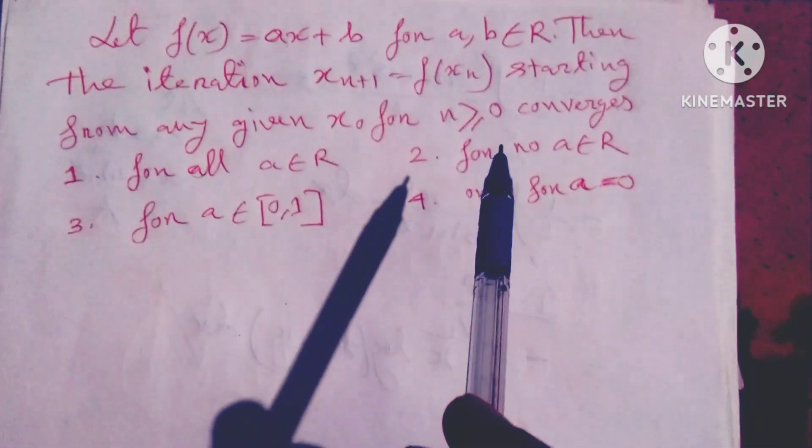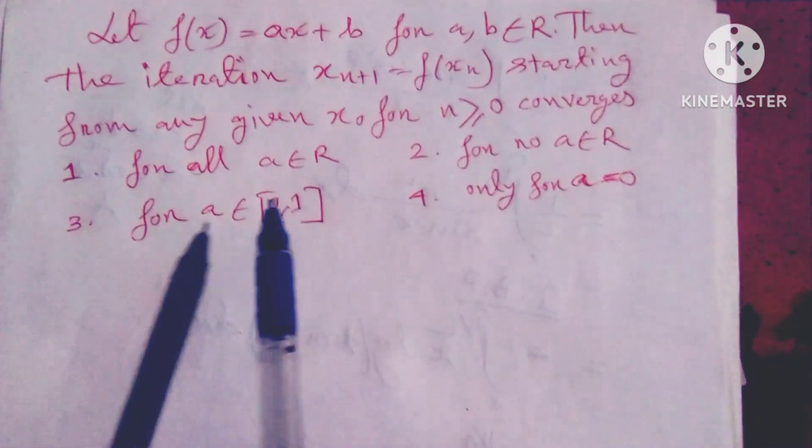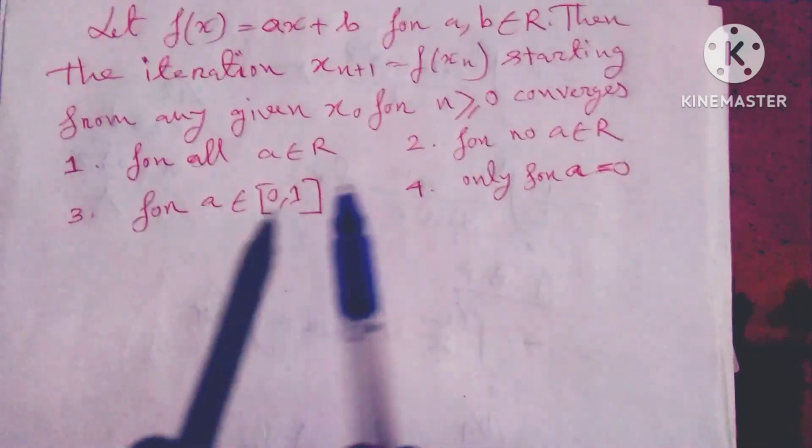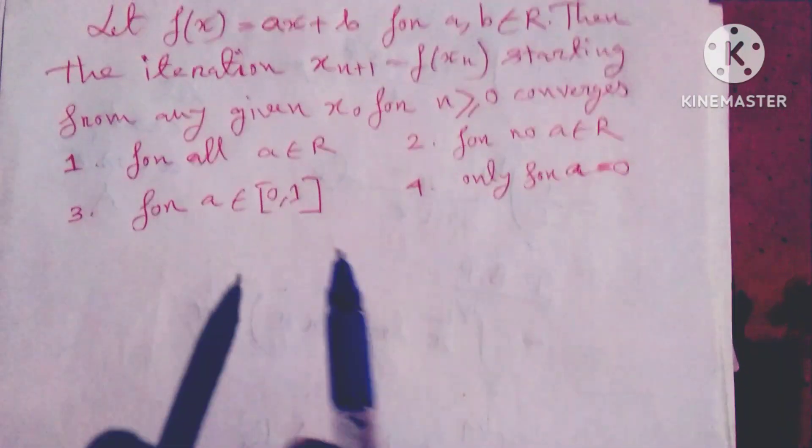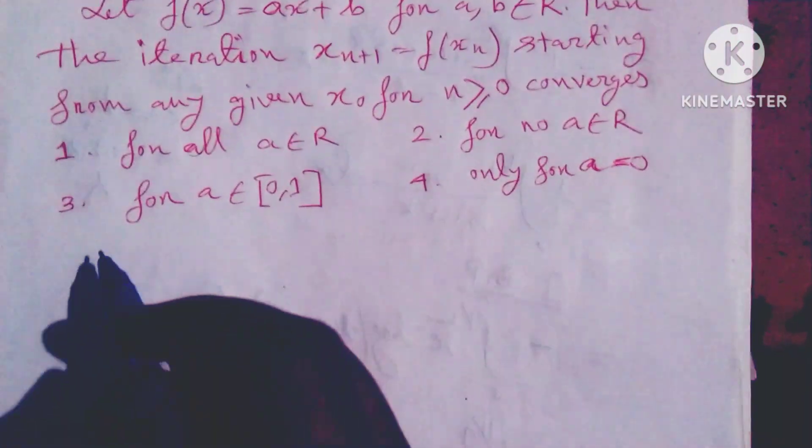...for n ≥ 0 converges: (1) for all a ∈ R, (2) for no a ∈ R, (3) for a ∈ [-1,1], (4) only for a = 0. So, given that...